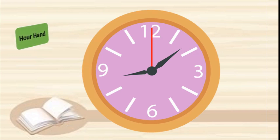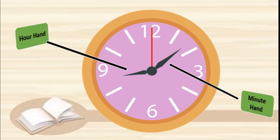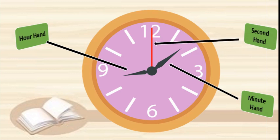Now, here we can see three hands. This is called the hour hand — it is the shortest one. The second one is called the minute hand, which is longer than the hour hand. The third one is very thin and is called the second hand. Some watches have only two hands — hour hand and minute hand — and some watches have the second hand as well.